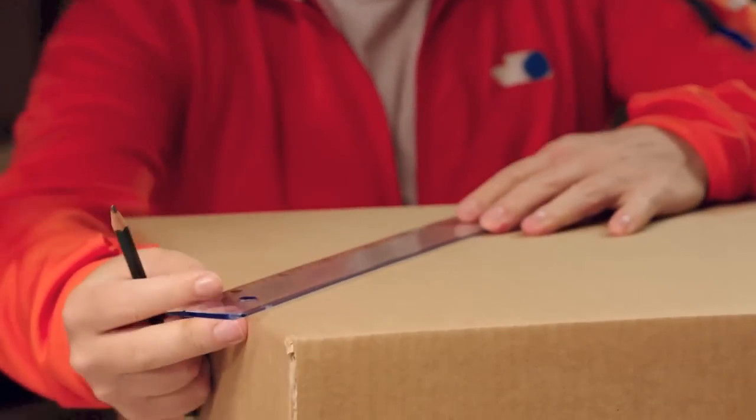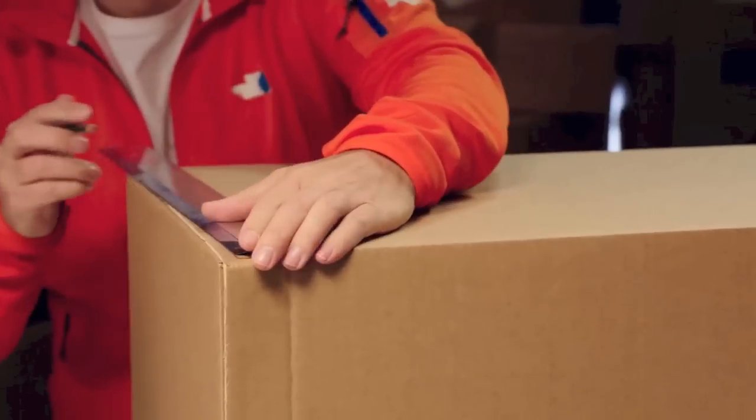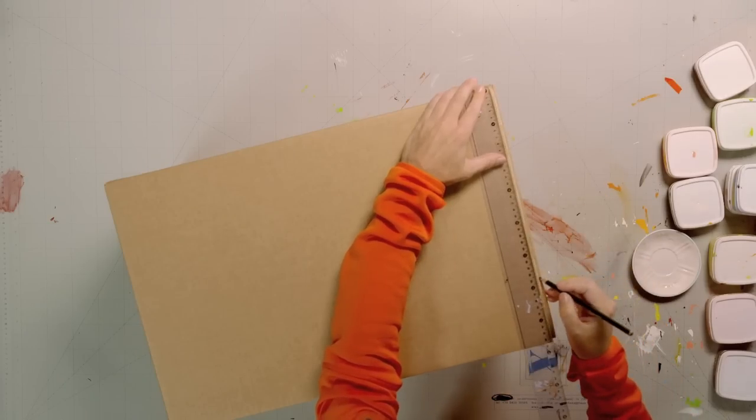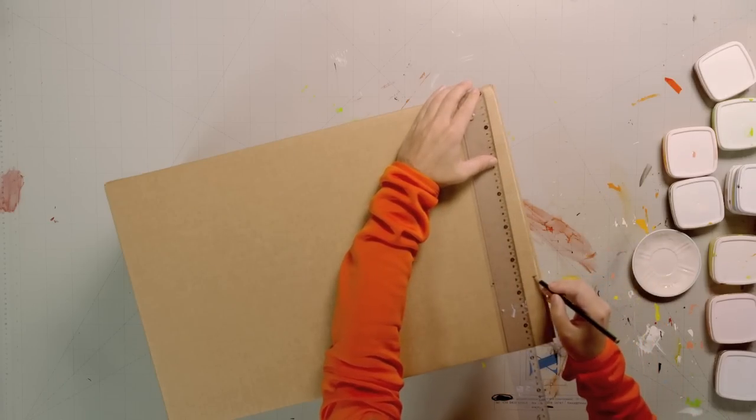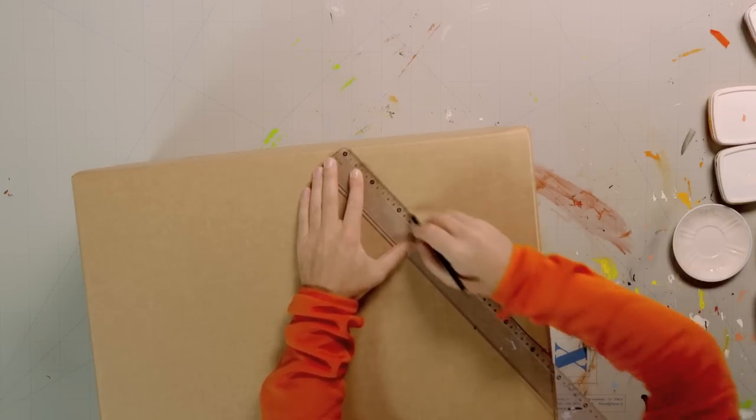We start by cutting away a triangle in each corner. Use a pencil and a ruler to draw a triangle on one of the sides. Then, flip the box, measure, and draw an identical triangle on the other side.